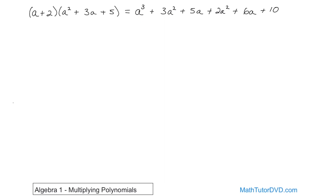We have an a cubed — there are no more a cubeds, so nothing to add. We have 3a squared and 2a squared; 3 plus 2 is 5, so 5a squared. Then 5a and 6a are like terms and together make 11a. And we have one constant with nothing to add, so plus 10. The answer is a cubed plus 5a squared plus 11a plus 10.